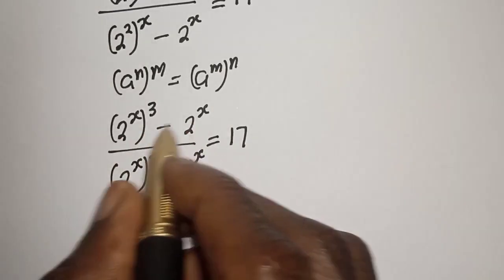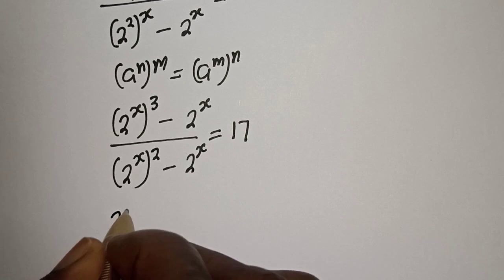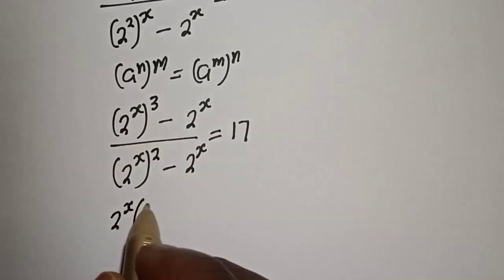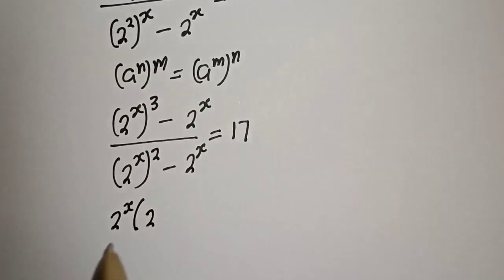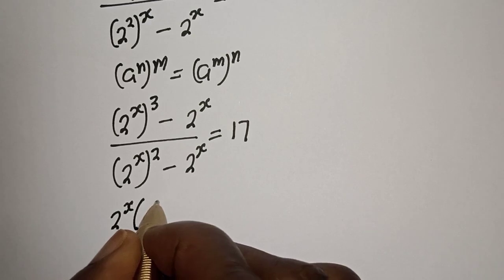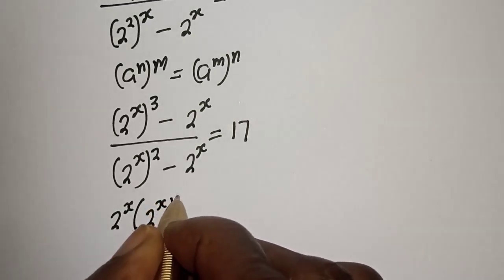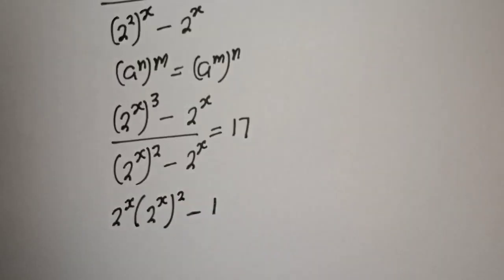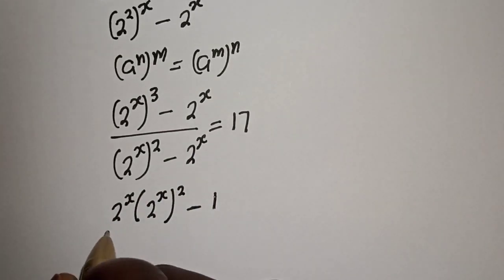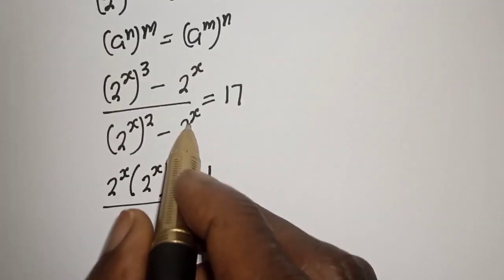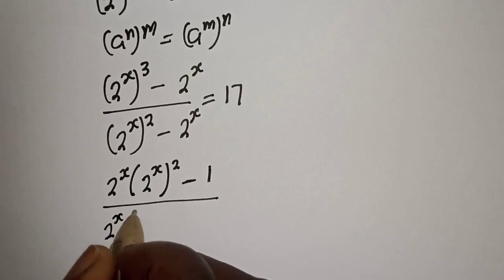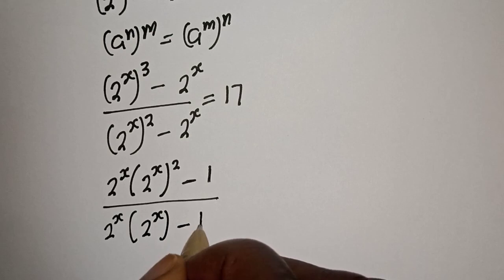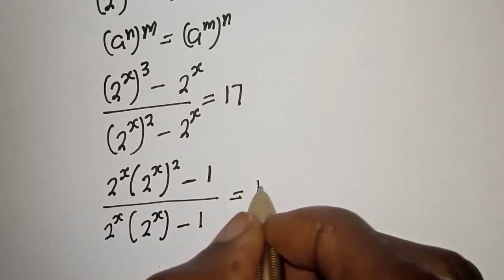From the numerator, 2 raised to the power s is common — let's bring it out. We have 2 raised to the power s, in bracket, times 2 raised to the power s squared minus 1, divided by the denominator where 2 raised to the power s is also common — bringing it out gives 2 raised to the power s minus 1, all equal to 17.